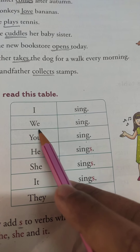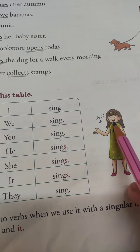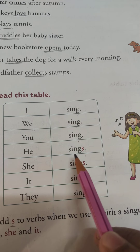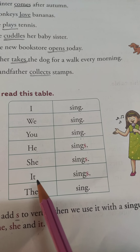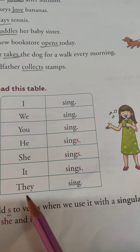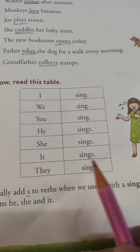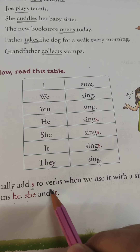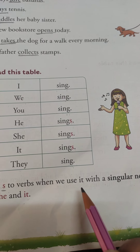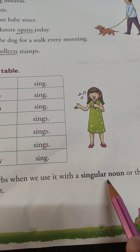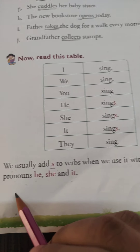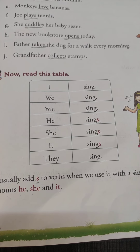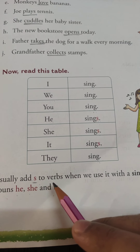I sing, we sing, you sing. He sings, she sings, it sings. And with a singular noun: they sing. We usually add 's' to verbs when we use them with a singular noun or the pronouns he, she, and it.